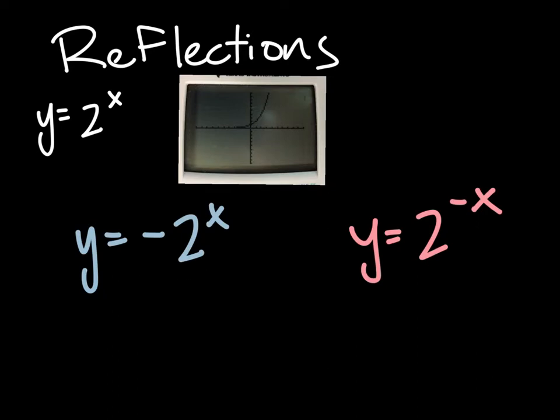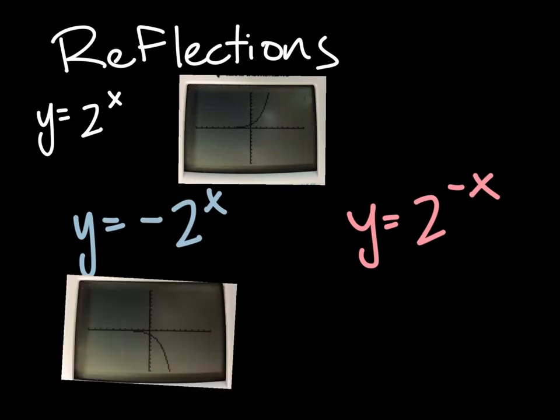If the negative is out in front, let's look at the graph. Here we have a reflection over the x-axis. See, because it was going like this, and it flipped over the x-axis.